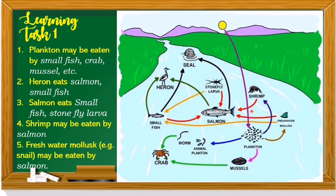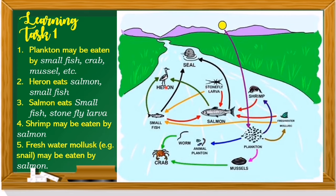For number 1, plankton may be eaten by small fish. This is the plankton — it may be eaten by small fish, crabs, mussels, and others. For number 2, heron eats salmon. This is the heron, the bird. It eats salmon, small fish, and others.